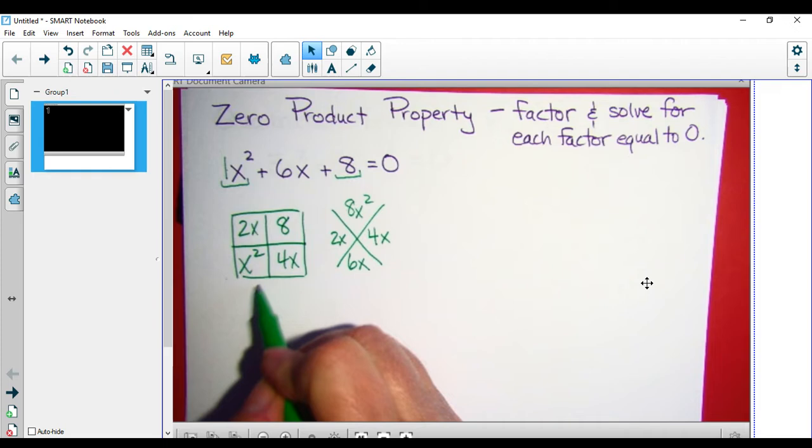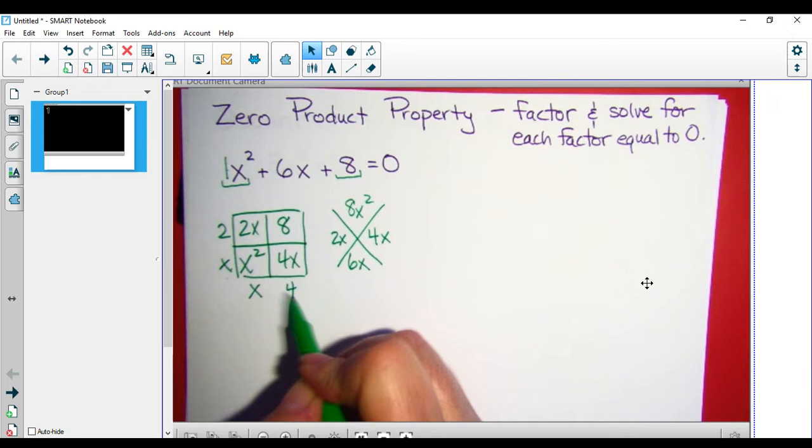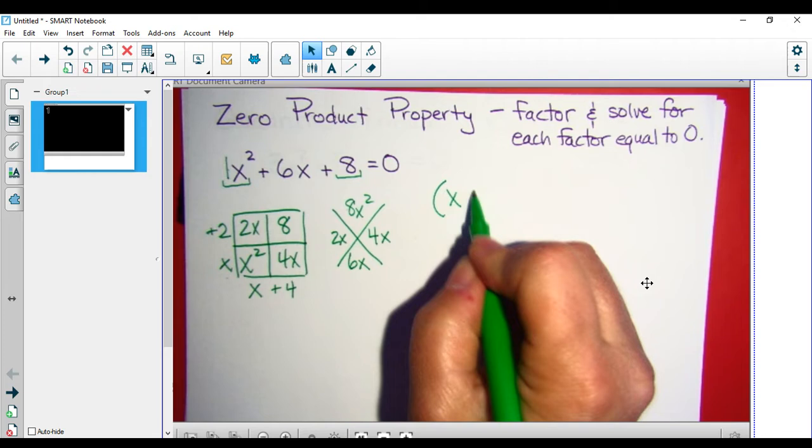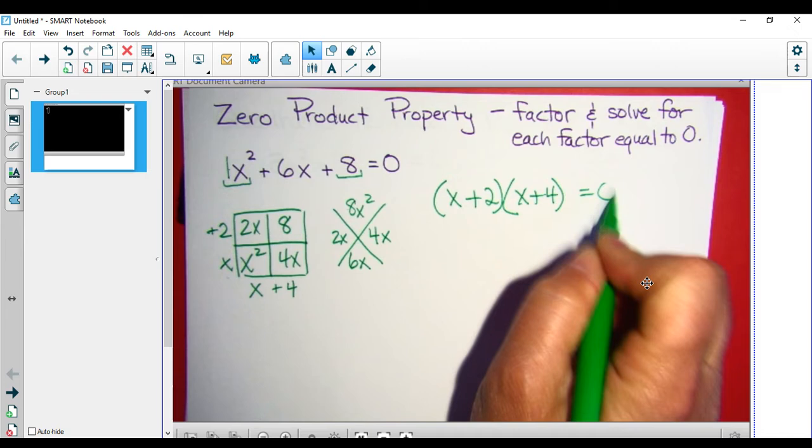Look for our common factors: x, x, 2, and 4. We didn't have any negatives. So I get x plus 2 times x plus 4 equals 0.